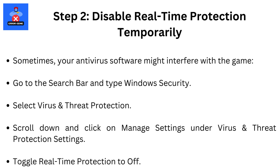Select Virus and Threat Protection. Scroll down and click on Manage Settings under Virus and Threat Protection Settings. Toggle Real-Time Protection to Off. Important: turn this back on after checking if the issue is fixed.